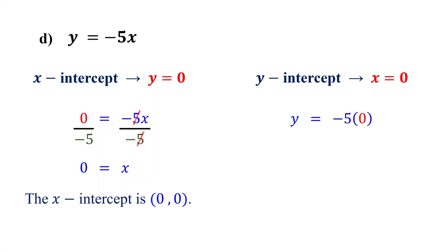Similarly, if you set x to 0 and solve for y, you find that the y-intercept is the point (0, 0). Notice that both intercepts are the same. This happens when the line passes through the origin.